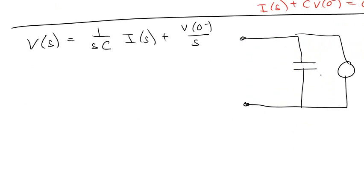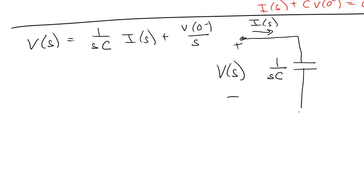So this 1 over SC is going to be the capacitance. Got IS coming in here. VS coming out here. And these are going to be added together, plus, which means... and the knot over s.